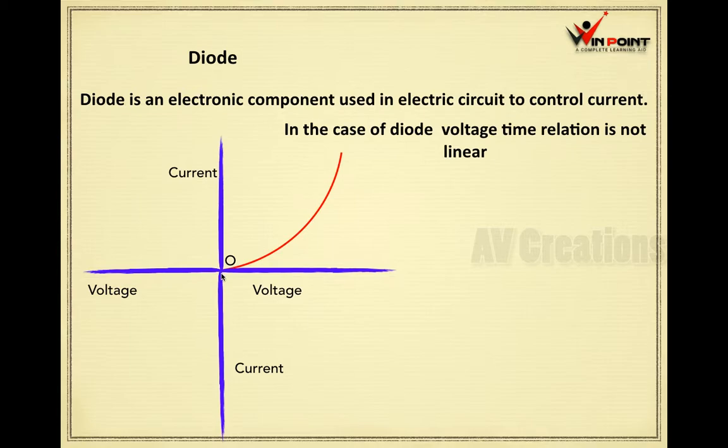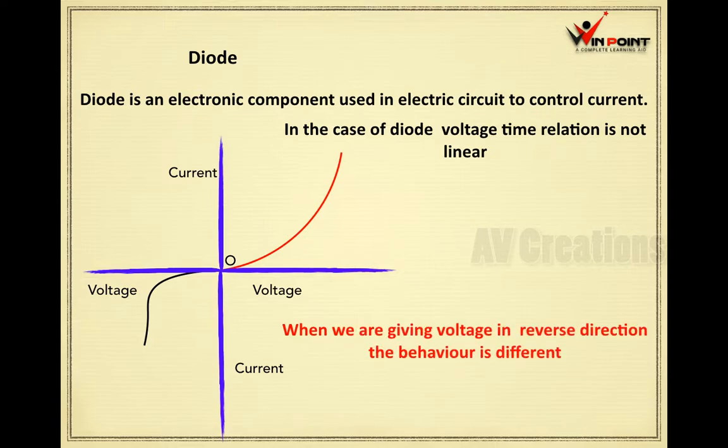It is first gradually increasing, then there is a sudden increase. In the case of reverse current, when we are reversing the current, the behavior is different. When we are giving voltage in reverse direction, the behavior is different.